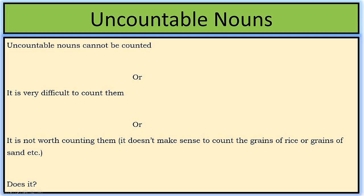Now comes the turn of uncountable nouns. Let's define uncountable nouns. Uncountable nouns cannot be counted — it is very difficult to count them, and it is not worth counting them. It doesn't make sense to count the grains of rice or grains of sand, etc.